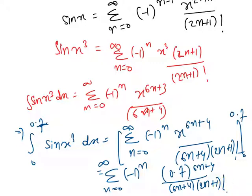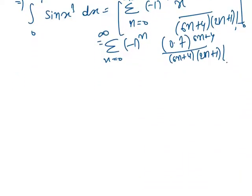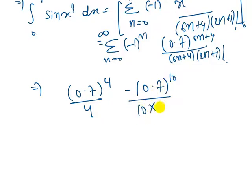So further we have 0.7 raised to power 4 over 4, minus 0.7 raised to power 10 over 10 times 3 factorial, plus 0.7 raised to power 16 over 16 times 5 factorial.